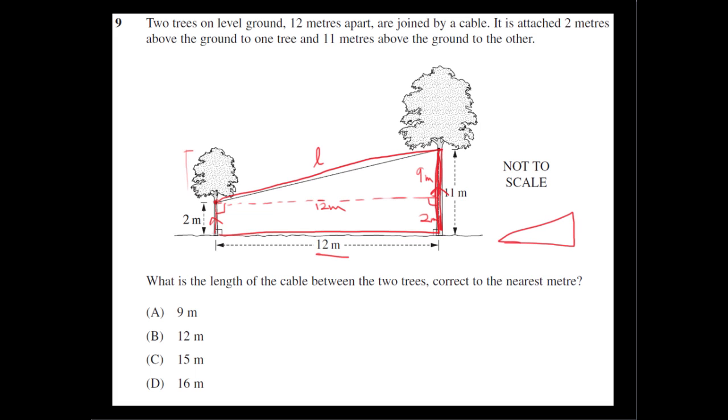So we have a triangle. That's 9. That's 12. And we're trying to find L. So L squared, using Pythagoras theorem, L squared is 12 squared plus 9 squared. 12 squared is 144. 9 squared is 81. 144 plus 81 gives us 225 meters. And so L is the square root of 225, which is 15 meters.